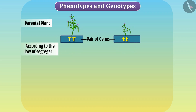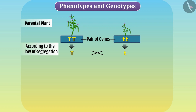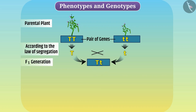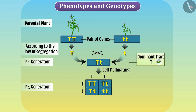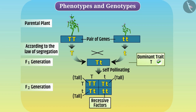According to the law of segregation, the factors in the pairs get separated during gamete formation. If we cross the two gametes, we will get an unequal pair of factors in the F1 generation. Therefore, the dominant trait T gets expressed. After self-pollinating the F1 generation plants, F2 generation plants will have various combinations. Since tallness is a dominant character, these plants will grow tall, and plants that have both recessive factors will be dwarf.